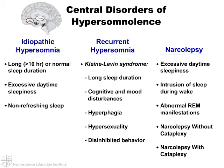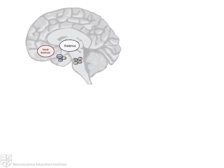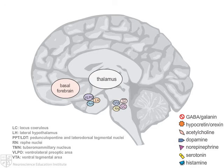With the exception of narcolepsy with cataplexy, the underlying neuropathology of the central disorders of hypersomnolence is largely unknown. In the case of narcolepsy with cataplexy, a clear neuropathological substrate has been identified: patients exhibit a profound loss of hypocretin-orexin neurons in the lateral hypothalamus.